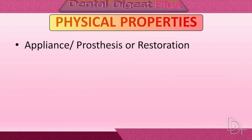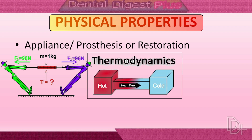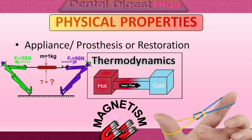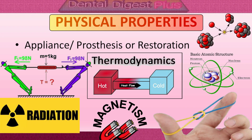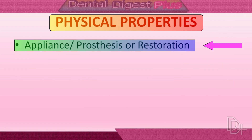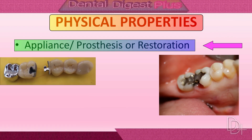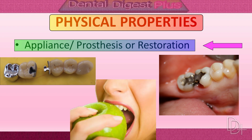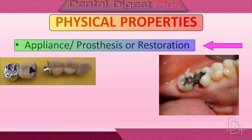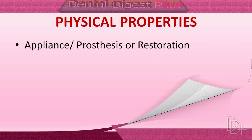Physical properties are based on the laws of mechanics, thermodynamics, elasticity, magnetism, radiation, atomic structure, or nuclear phenomena. Any prosthesis or restoration undergoes deformation due to various forces of mastication. Complete knowledge of physical properties enhances the effectiveness of a prosthesis, its safety limitations, and increases the chances of the prosthesis lasting for a longer period of time.